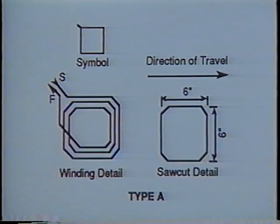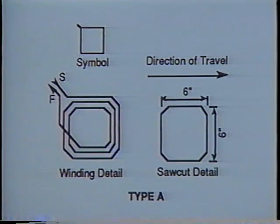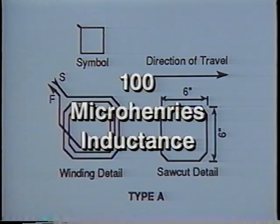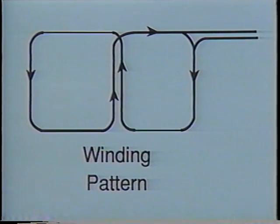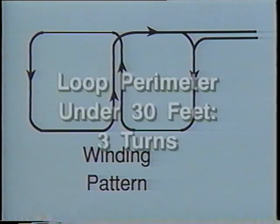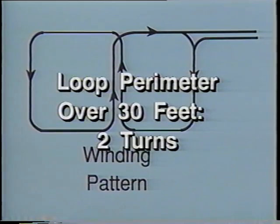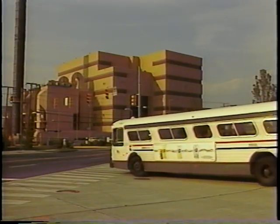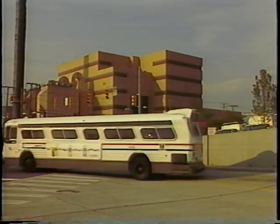All loops should have enough turns to provide at least 100 microhenries inductance per loop. A simple rule of thumb: if the loop perimeter is under 30 feet, use three turns of wire; if the loop perimeter is over 30 feet, use only two turns of wire.